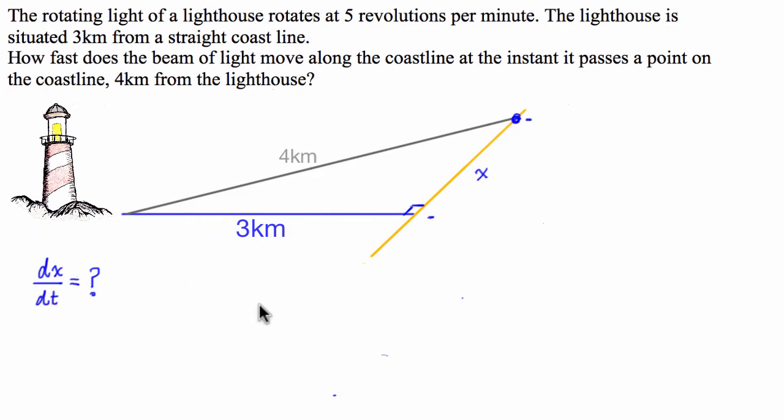Now we have the relationship that the question is asking for. What I usually do is scour back through the question and see if I can find any more information on other relationships. If we scour through the question, the first thing we find is this 5 revolutions per minute.